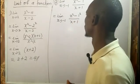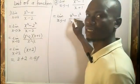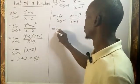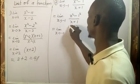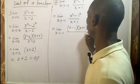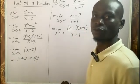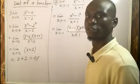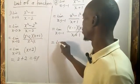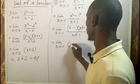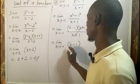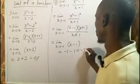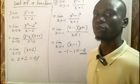Rewriting x² minus 1 as x² minus 1², we apply the difference of two squares: (x minus 1)(x plus 1) all over (x plus 1). The (x plus 1) terms cancel, leaving limit as x tends to minus 1 of (x minus 1). Substituting minus 1: minus 1 minus 1 equals minus 2. So the limit is minus 2.